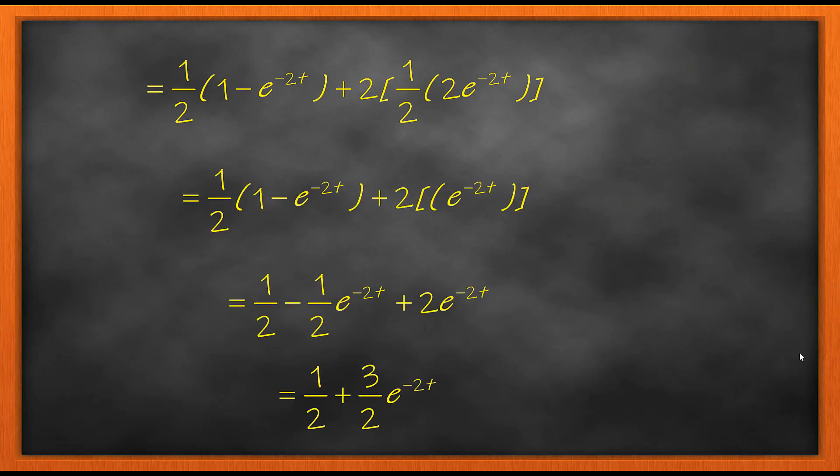After doing this and further simplification, we get the final answer which is 1/2 + 3/2 e^(-2t). That is your answer choice.